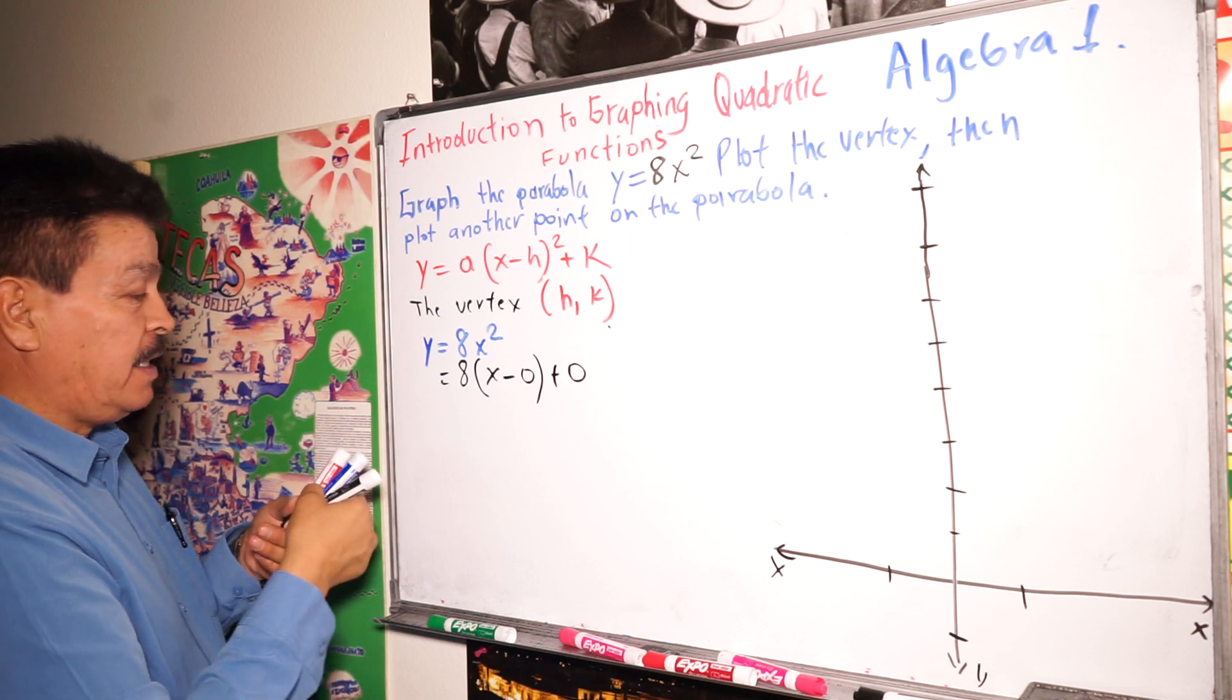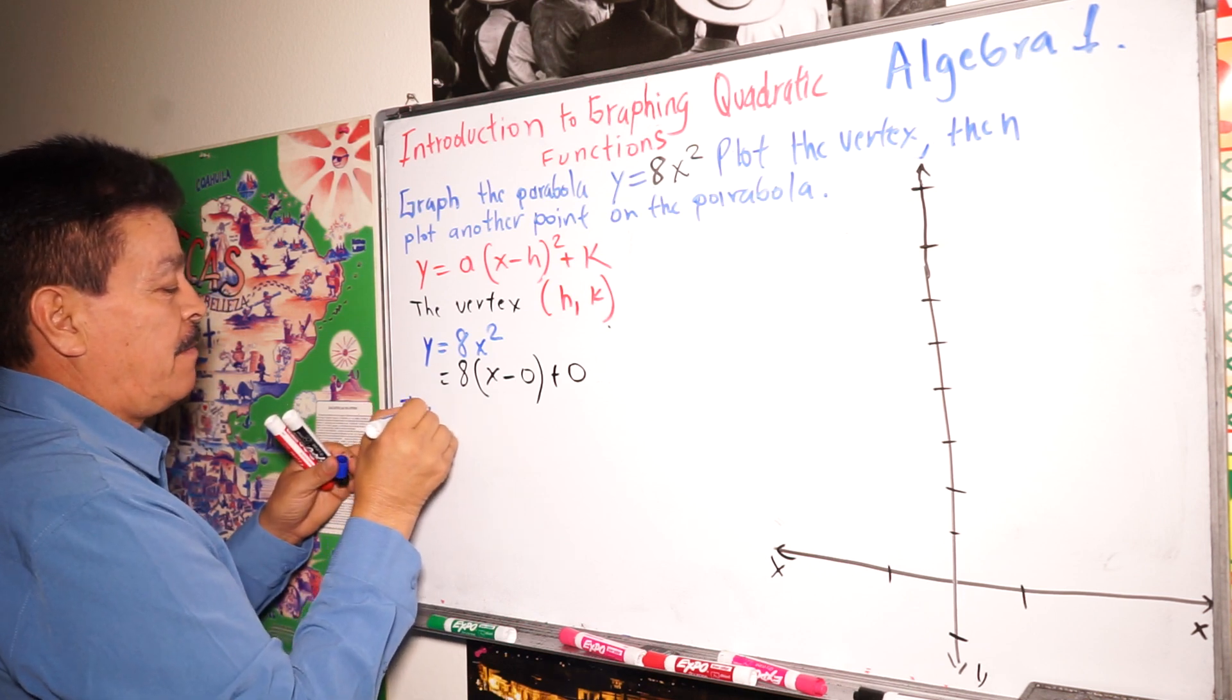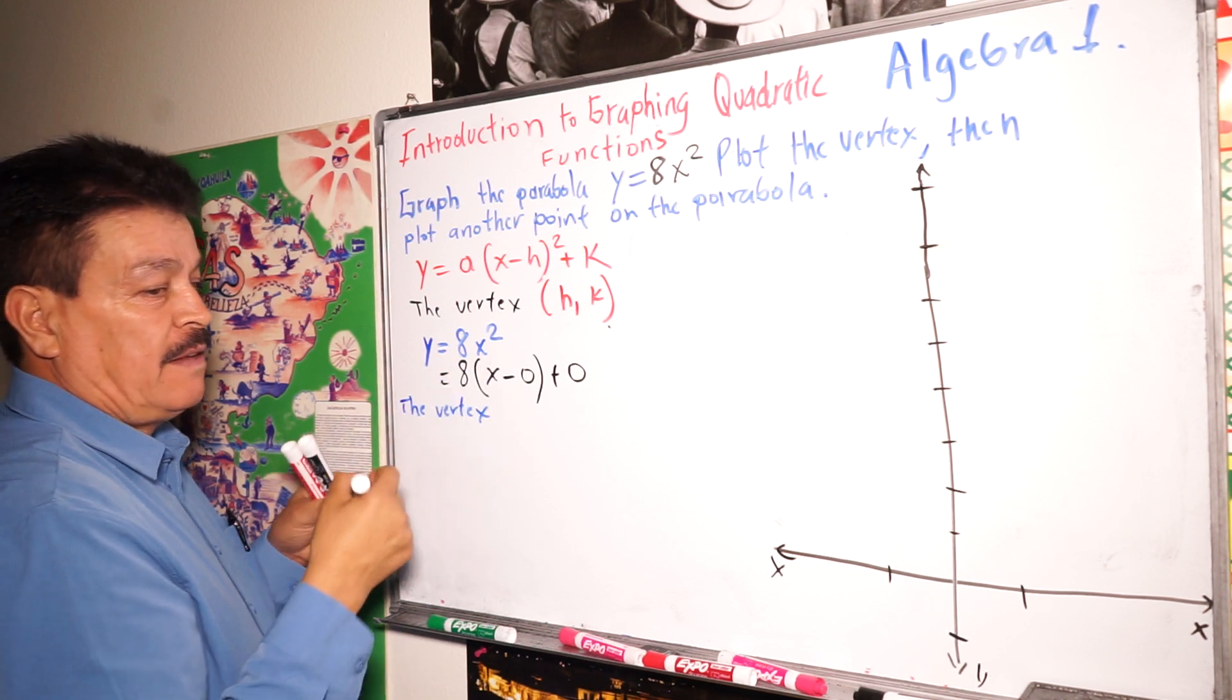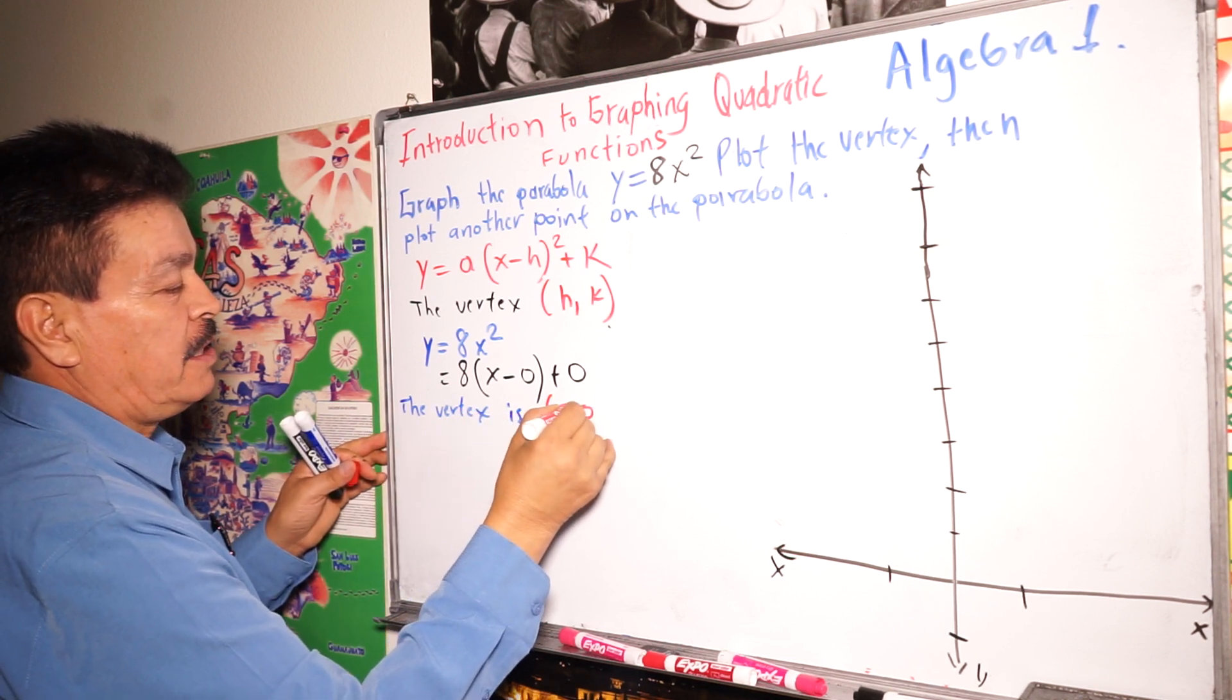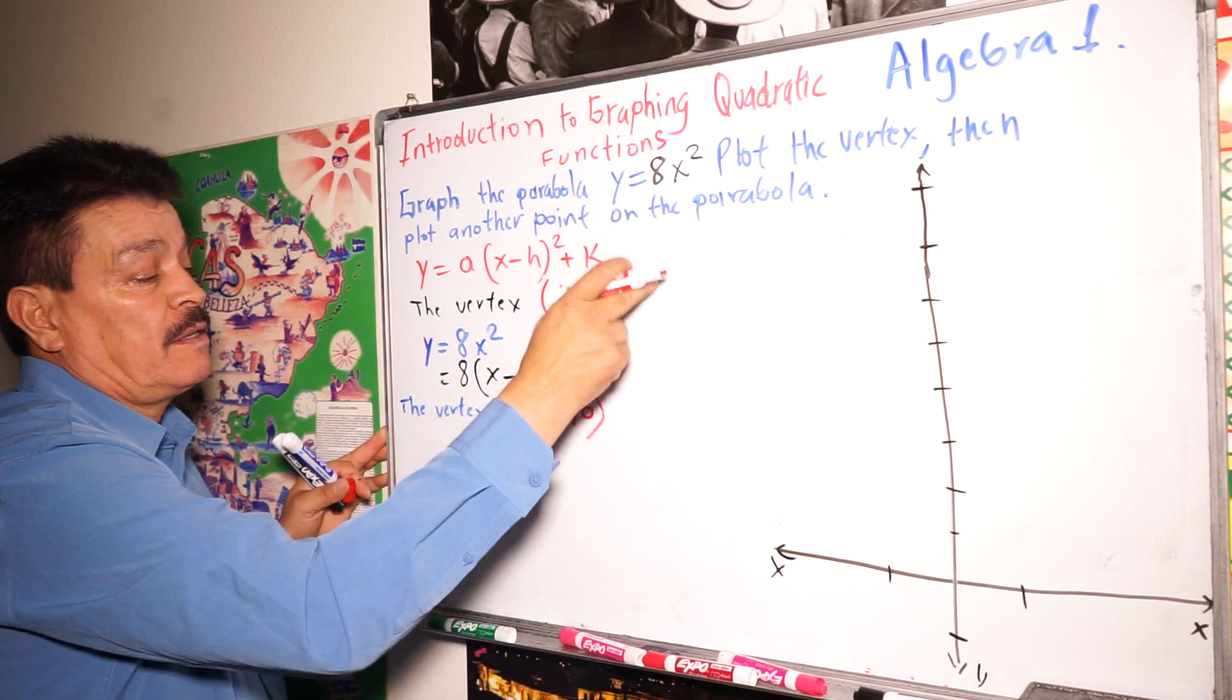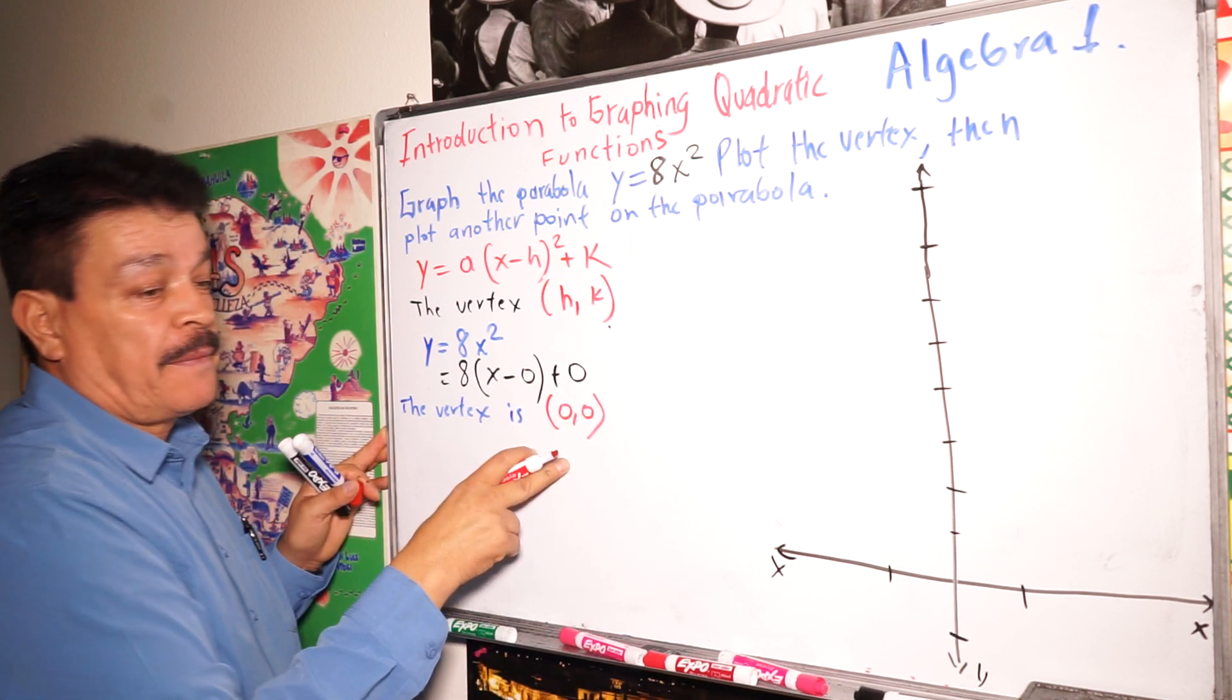The vertex. Where is the vertex here? The vertex is zero comma zero in this problem, which is the origin. This is the origin of the parabola.